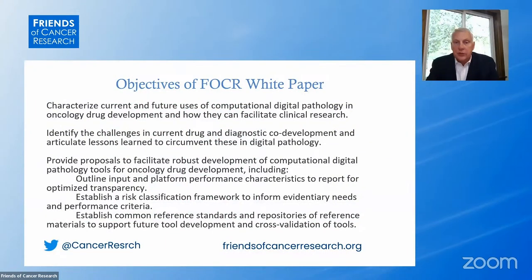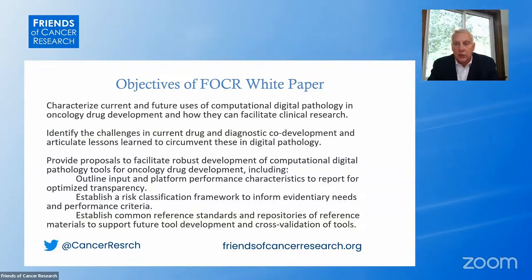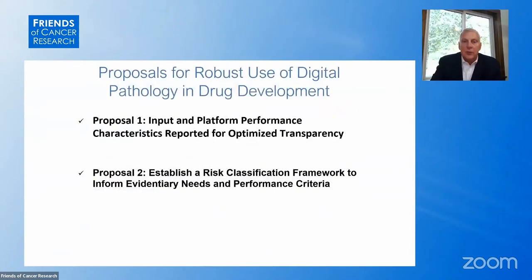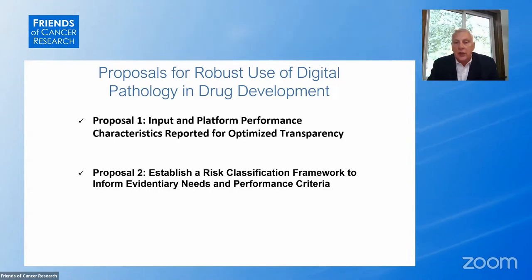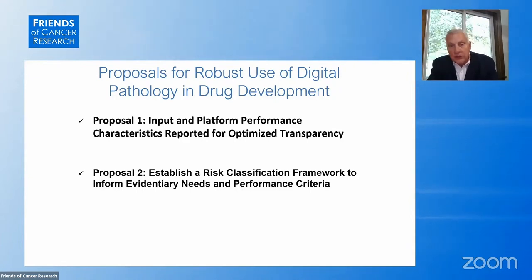The Friends of Cancer Research white paper had several objectives: to characterize the current and future uses of digital pathology, to identify the challenges in current drug and diagnostic co-development, and to provide proposals to facilitate robust development of computational tools in drug development. There were two major proposals. One was to have input and performance standards to allow for optimal transparency and comparison between different methodologies — Friends has done this with other biomarkers such as PD-L1 testing, TMB testing, and circulating tumor DNA.